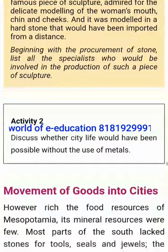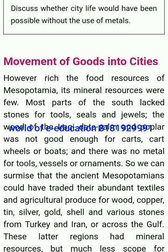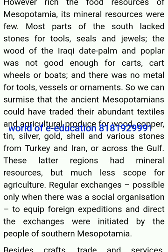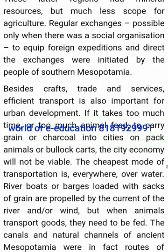Activity 2: Discuss whether city life would have been possible without the use of metals. Movement of goods into cities: however rich the food resources of Mesopotamia, its mineral resources were few. Most parts of the south lacked stones for tools, seals and jewels. The wood of the Iraqi date palm and poplar was not good enough for carts, cartwheels or boats, and there was no metal for tools, vessels or ornaments. The ancient Mesopotamians could have traded their abundant textiles and agricultural produce for wood, copper, tin, silver, gold, shell and various stones from Turkey and Iran or across the Gulf. These latter regions had mineral resources but much less scope for agriculture. Regular exchanges — possible only when there was a social organization to equip foreign expeditions and direct the exchanges — were initiated by the people of southern Mesopotamia.